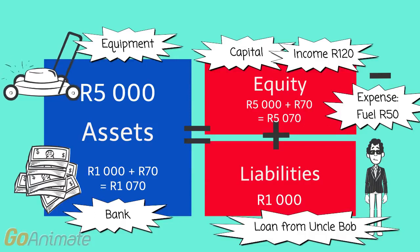It means that the two red blocks add up to 6,070. And the assets — the blue block — and the red blocks, equity and liabilities, are equal.